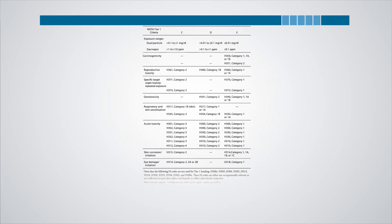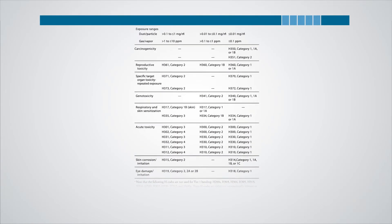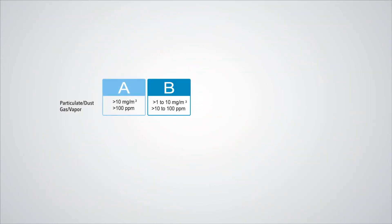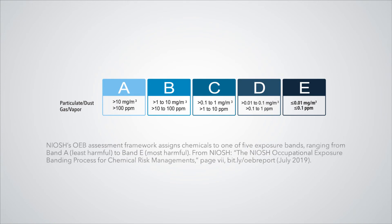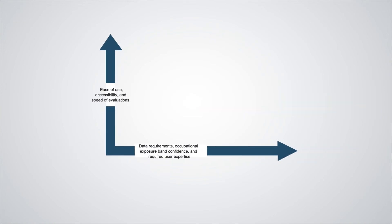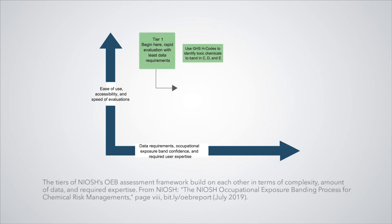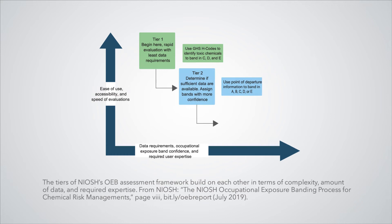NIOSH Occupational Exposure Banding Process considers nine health endpoints and groups chemicals into one of five exposure bands. These bands are air concentration levels at which workers dealing with a chemical can expect to be protected. A Tier 1 assessment is based on publicly available data and requires the least amount of training, while Tier 2 employs database searches of health effects for more experienced professionals.